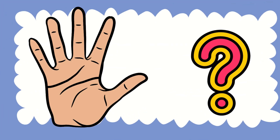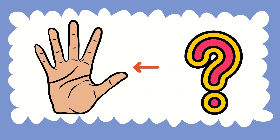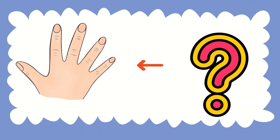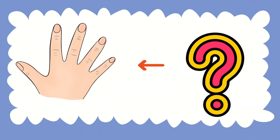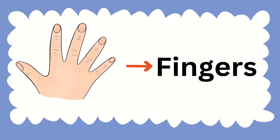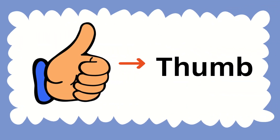Tell the name of this body part — this is a hand. And this one? You are right, this is called our fingers. What about this one? This is called a thumb.